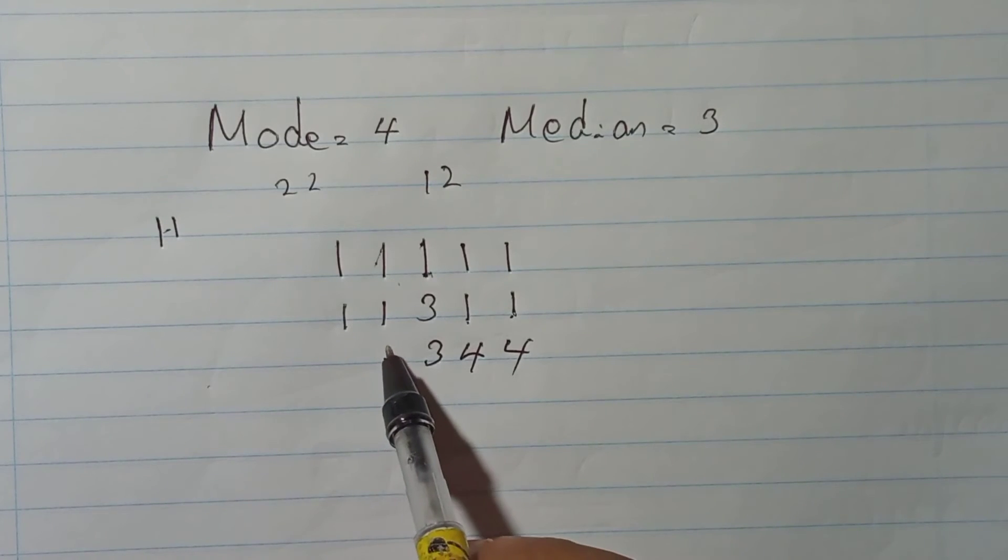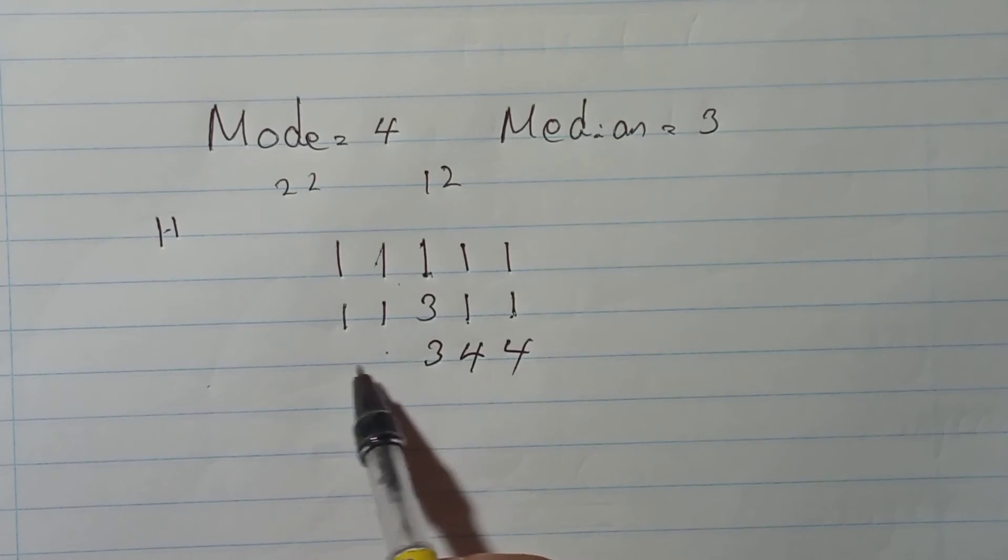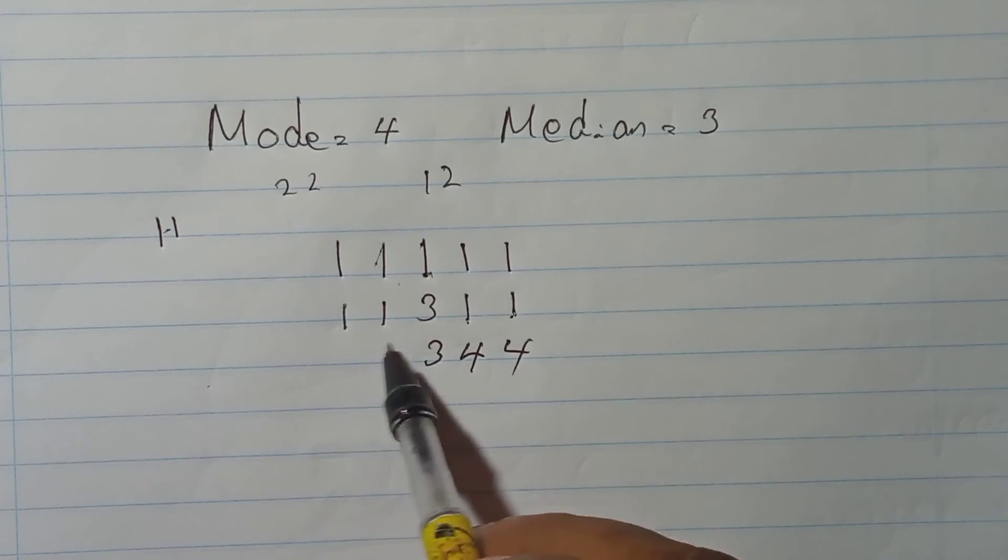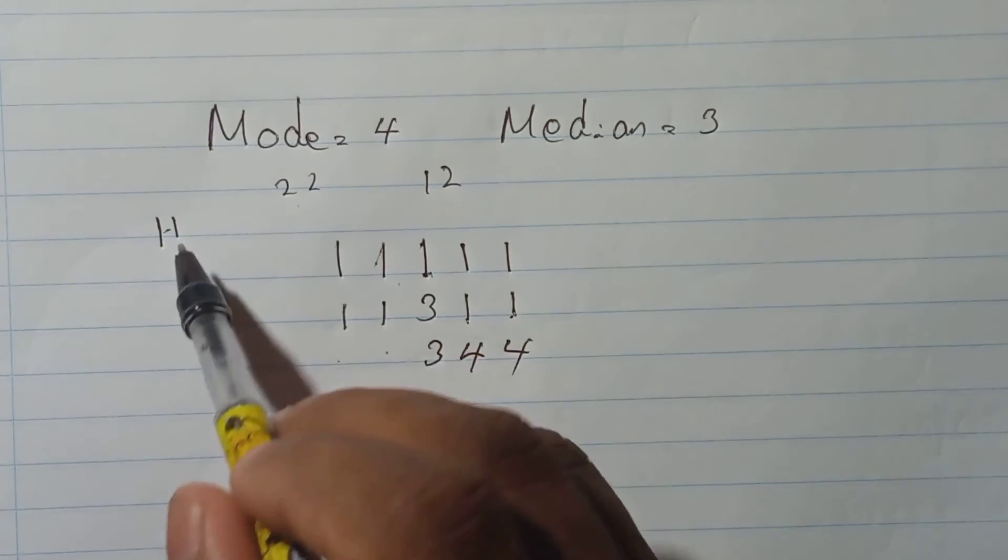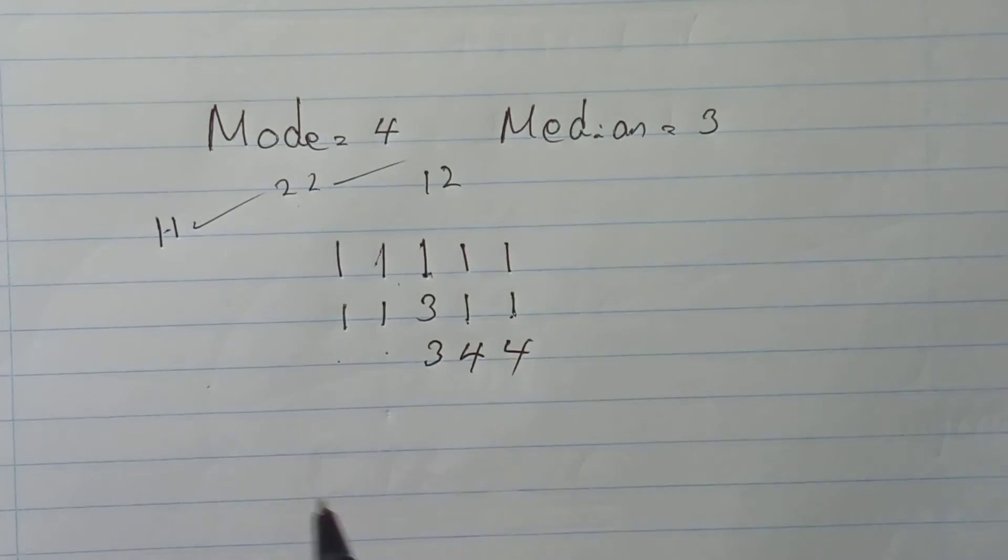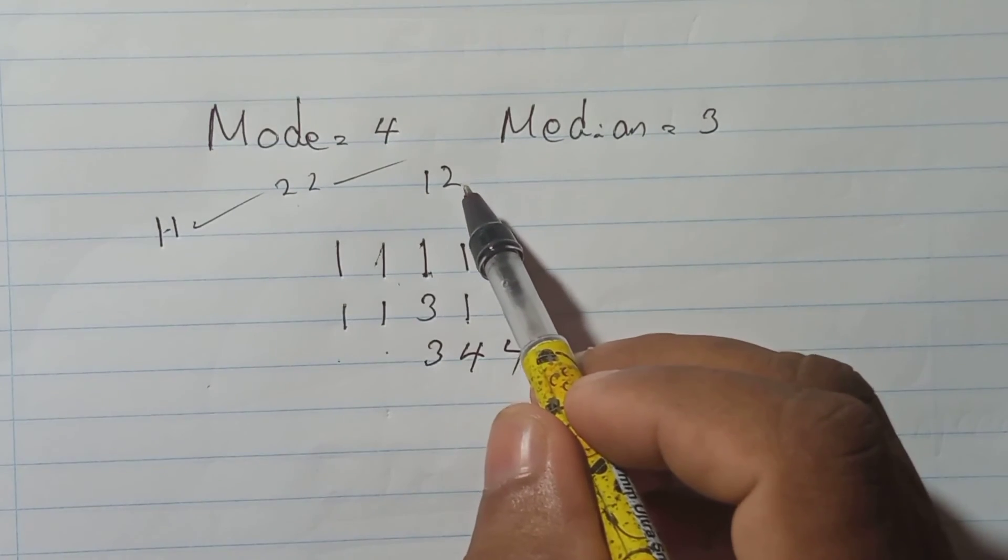It must be what? 4 is the mode, then 3 can't be twice, right? So what should be the numbers here? Right, it can be... 2, 2 can't be, 1, 1 can't be, 2, 2 can't be. And here should be what?